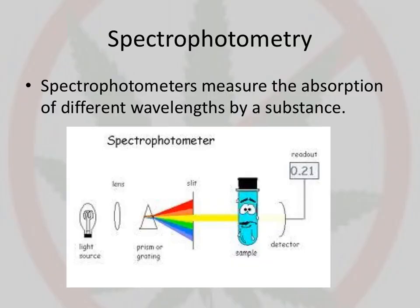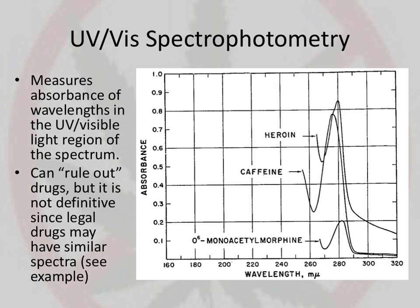A spectrophotometer literally just measures the amount of light that gets absorbed at different wavelengths of some substance. You have some type of light source that gets focused so you can use a slit to specifically choose what wavelength you want to look at. It shines through the sample, and then the detector detects how much light gets absorbed versus how much light gets transmitted through the sample.